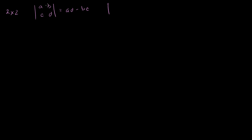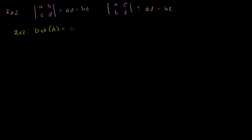The determinant of the transpose would be the determinant of a, c, b, d — the columns turn into the rows and the rows turn into the columns. That is going to be equal to ad minus bc again. The only thing that happened is these two entries got swapped, and they multiplied times each other anyway. So these two things are equivalent. For the 2×2 case, the determinant of a matrix is equal to the determinant of its transpose.